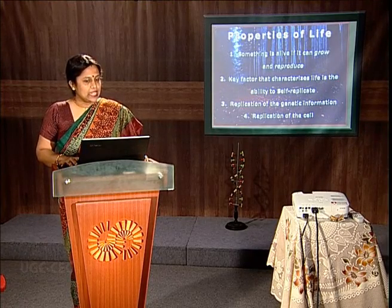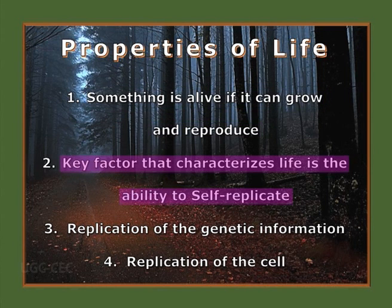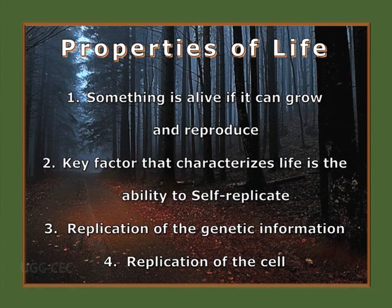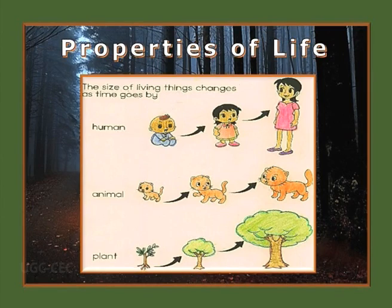Let's look at the properties of life. Something that is alive is capable of reproduction at some stage of its life cycle — it should have the capability of self-replication. The genetic information hidden in its genome should be replicated along with it, and the cell should also undergo replication. All life forms grow in size as they are living, which is their indication of being viable.